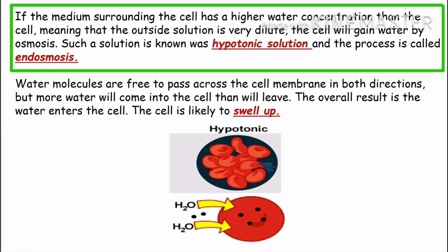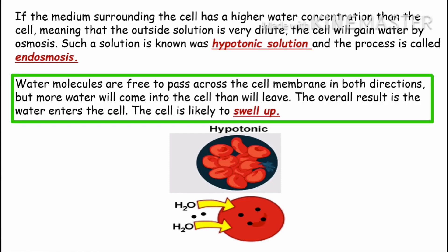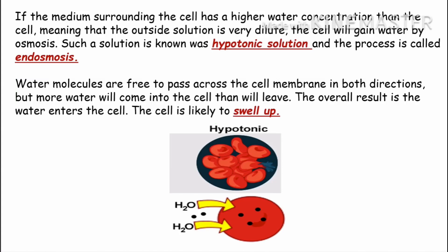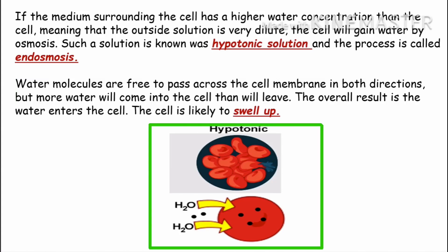First condition: if the medium surrounding the cell has a higher water concentration than the cell — meaning the outside solution is very dilute — the cell will gain water by osmosis. Cell ke bahar water concentration zyada hai andar se, toh water bahar se andar jaayega aur cell swell karega, yaani phool jaayega. Aise solution ko hypotonic solution kahenge aur is process ko endosmosis kahte hain. Water molecules waise toh andar bhi ja sakte hain aur bahar bhi aa sakte hain lekin concentration difference ki wajah se paani cell ke andar zyada aayega aur cell swell ho jaayega.